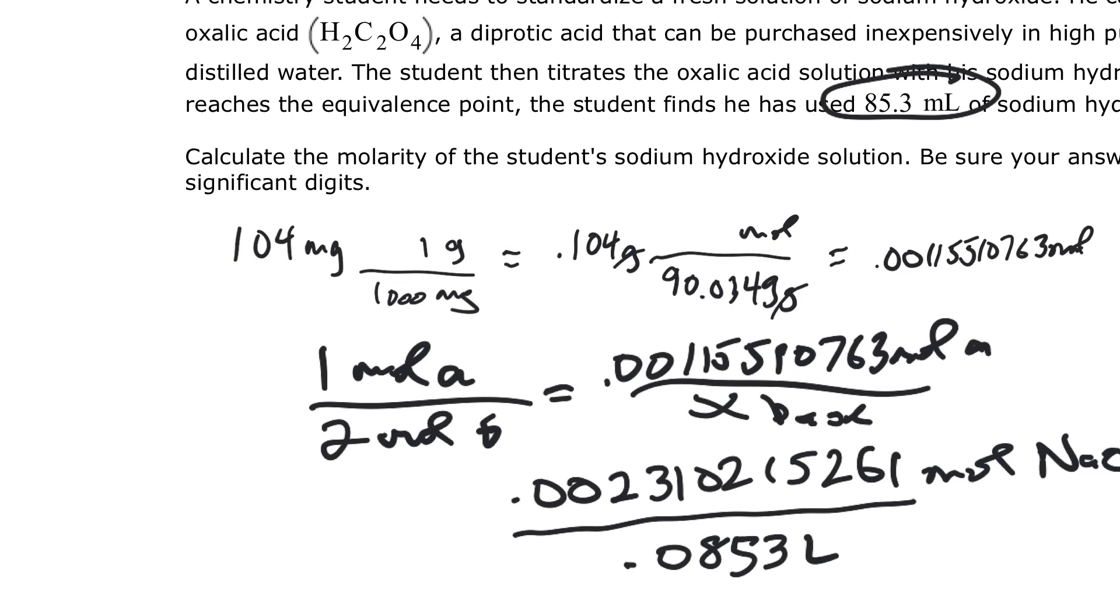So 0.0853, and I get 0.02708341455. And I need to, what significant digits do I have? I have three, three significant digits in the 85 and the 250, the 104. So I have three, so I need three significant digits. And so this is going to be 0.0271 molar. So that's the concentration of the sodium hydroxide.